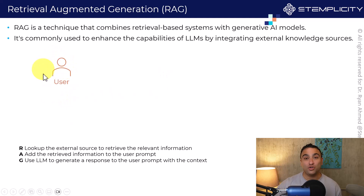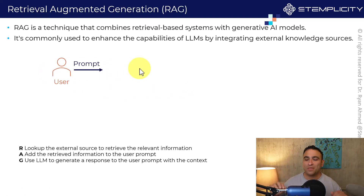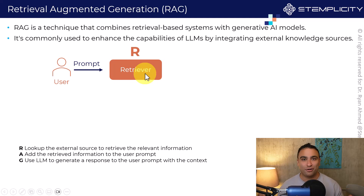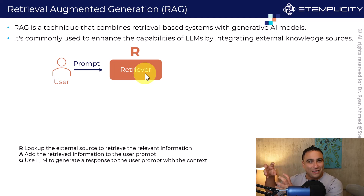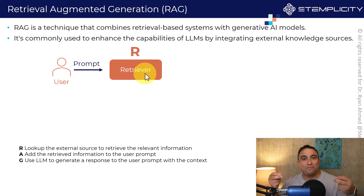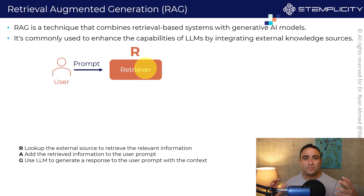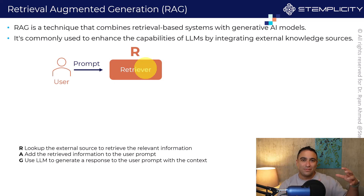Let's assume that you are a user who opens ChatGPT and sends a prompt. That prompt is going to be sent to what we call a retriever. So instead of taking that prompt and sending it directly to the brain — the AI model or the LLM — the first step is to retrieve from a knowledge base. For example, if you are a medical company with reports from previous diagnoses, you can keep that database and send the prompt to the retriever.